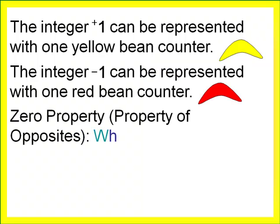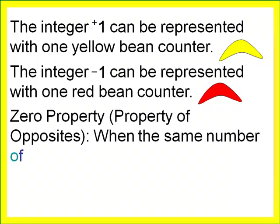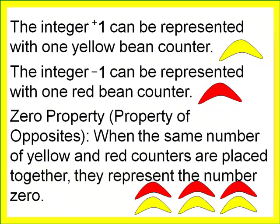We also made use of the zero property. The zero property says that when the same number of yellow and red counters are placed together, they represent the number zero. At the bottom of the screen, I have a grouping of three red counters and three yellow counters. When they are grouped together like that, that is one way of representing the number zero.